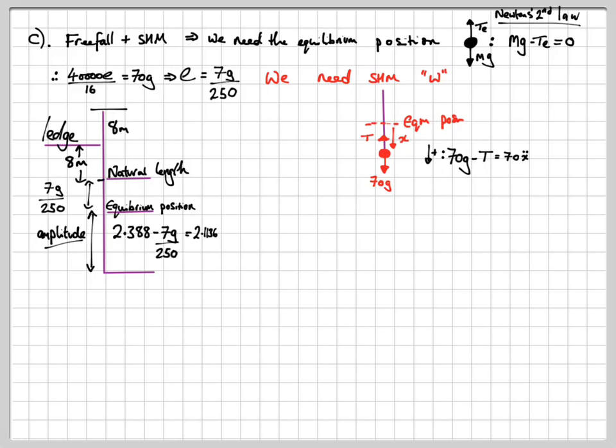And now, I'm just going to put the tension in using Hooke's law. But, of course, for Hooke's law, the overall extension will be the 7g over 250 plus this additional distance of x, i.e. the distance beyond the natural length. So, it looks something like this.